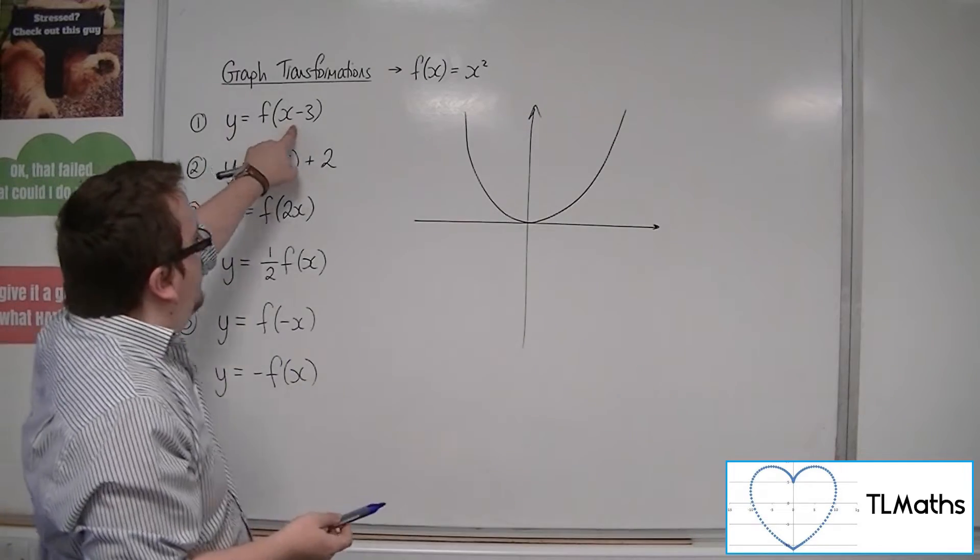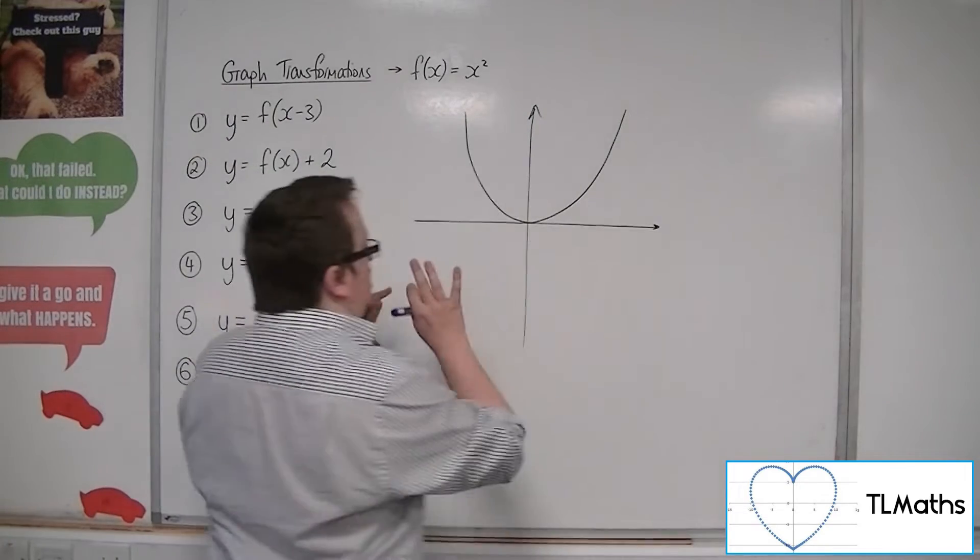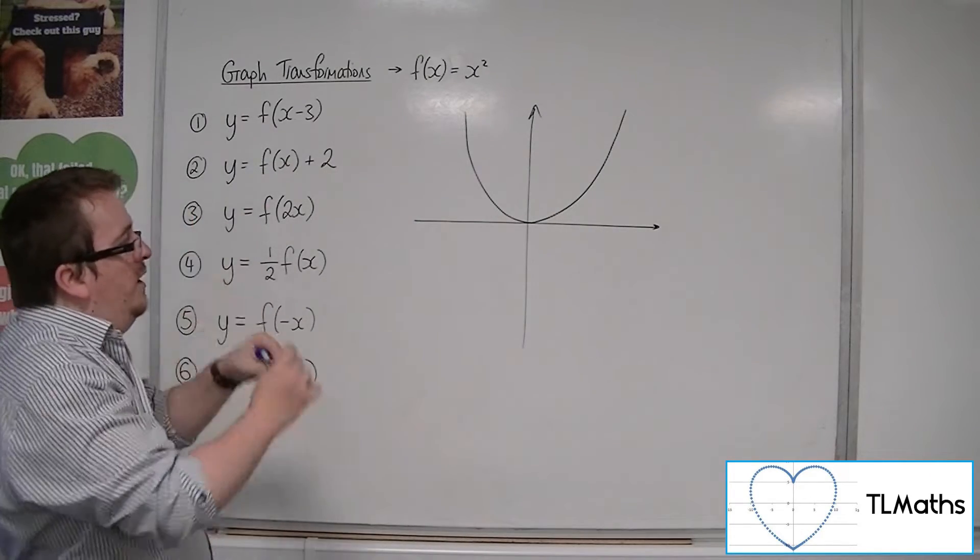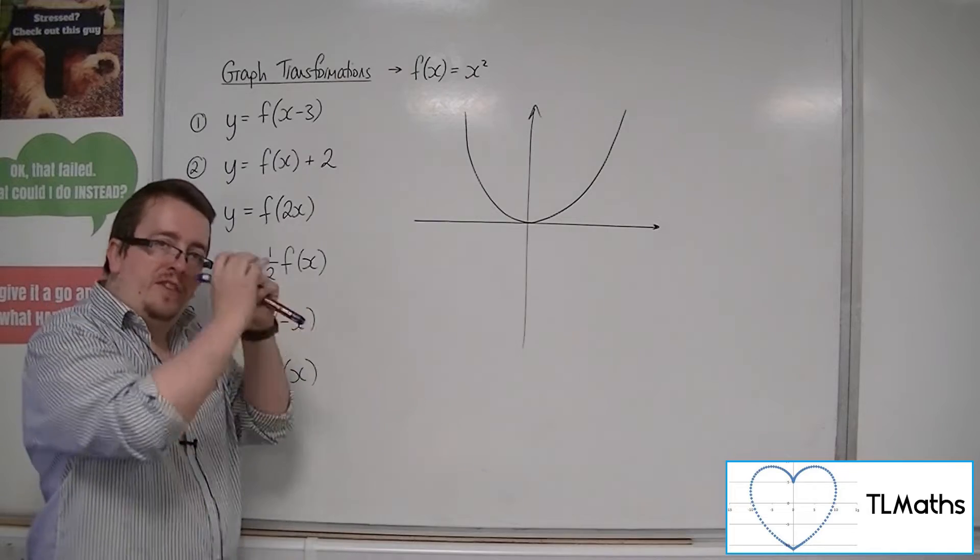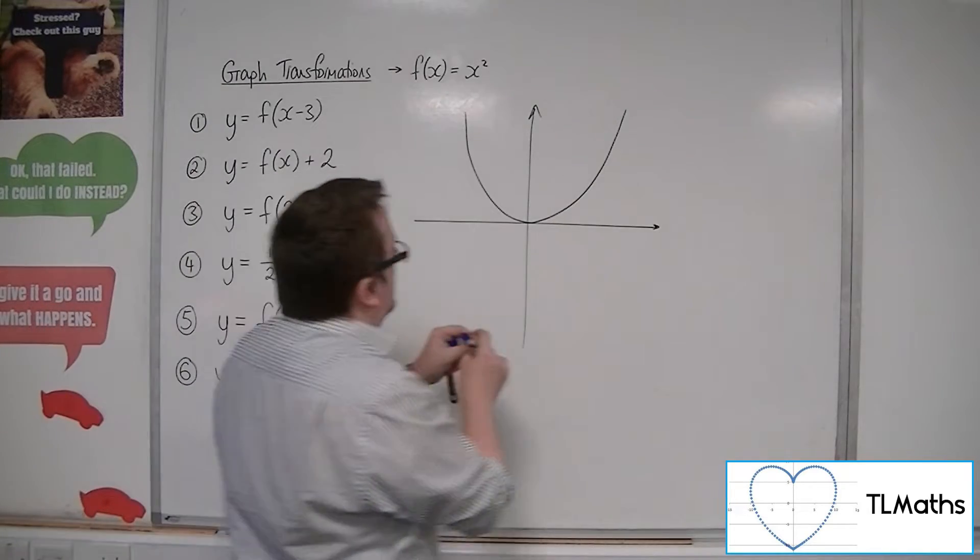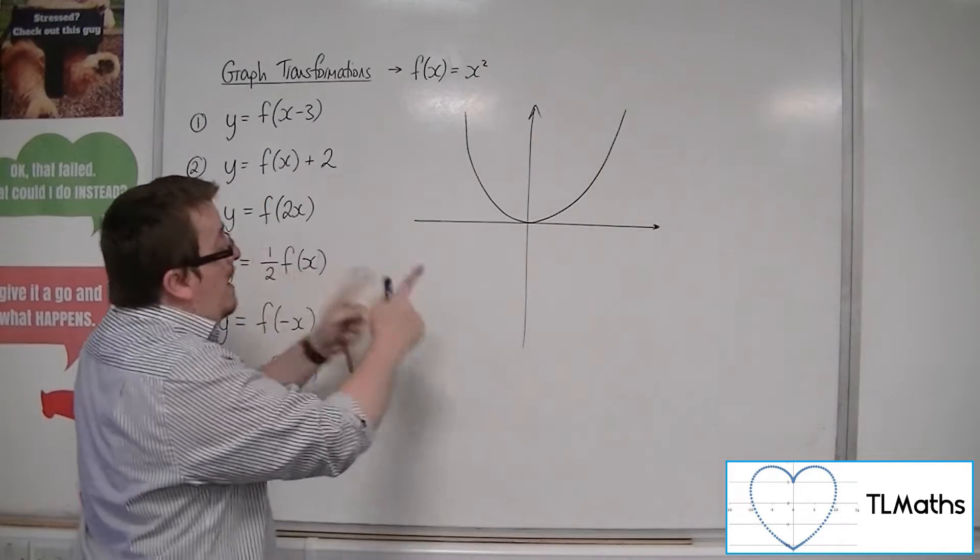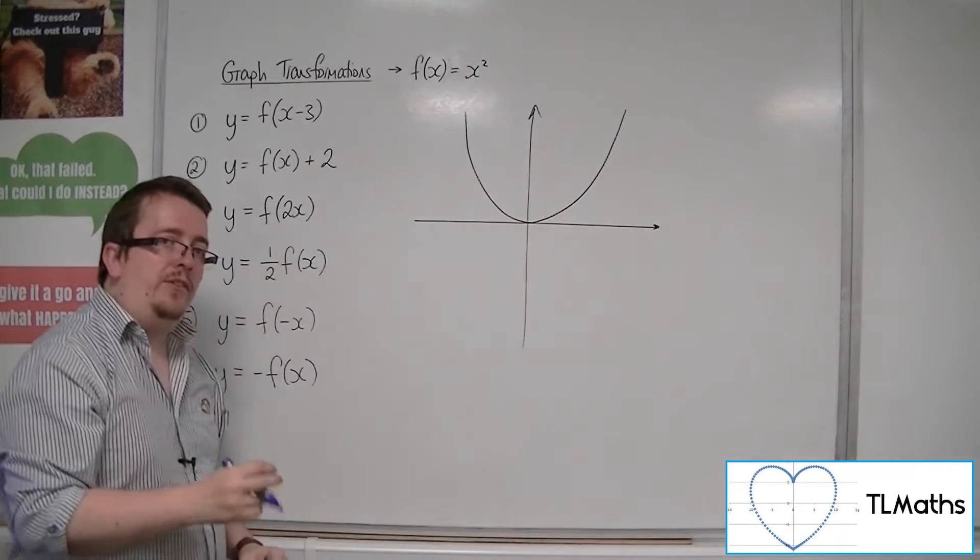So f of x minus 3 will be translated 3 to the right. Now, whenever performing a translation, you really just need one single point as a focal point to then redraw the curve. For a parabola, that would be the vertex, 0, 0.